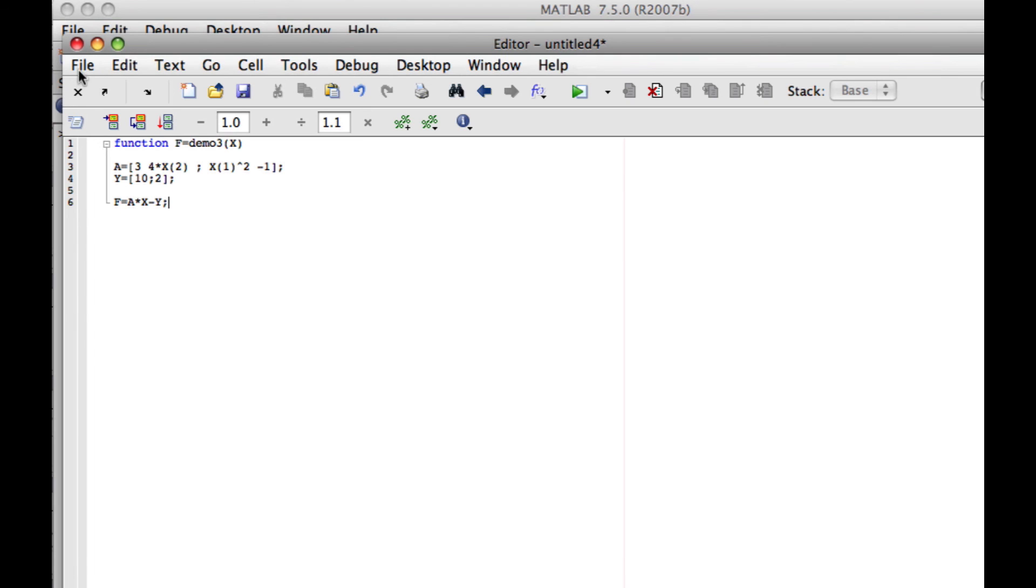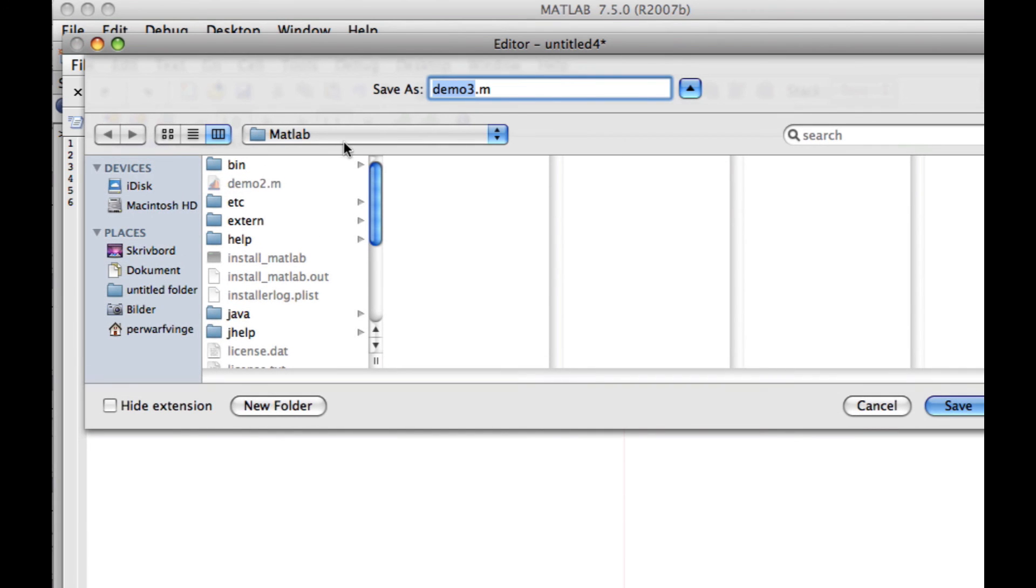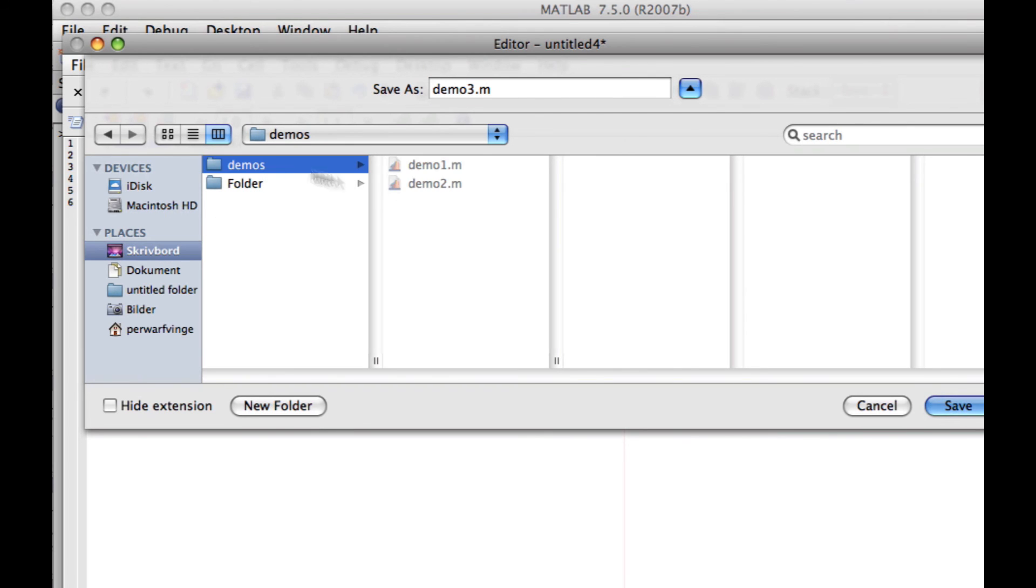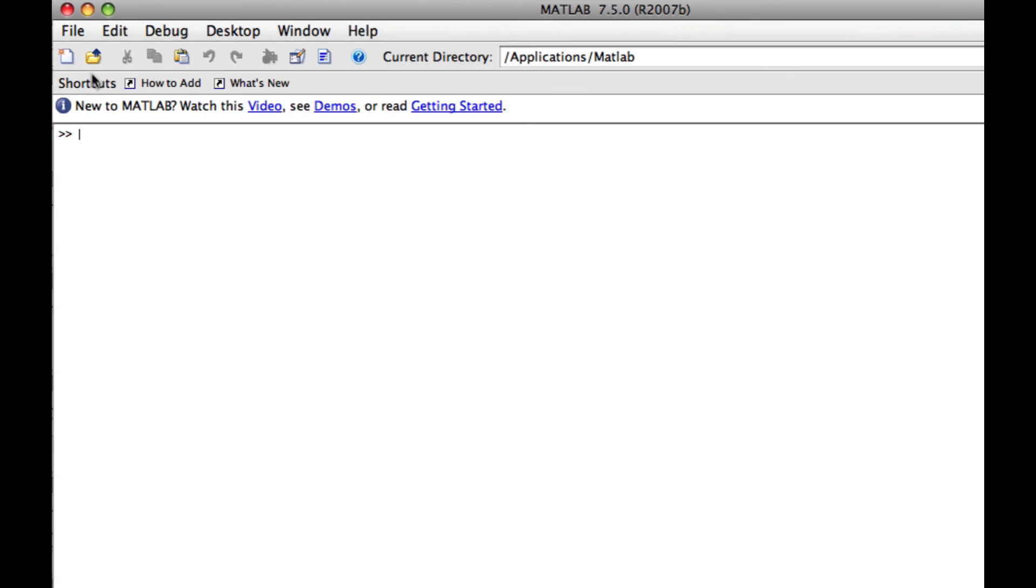I save this file as demo3 in the correct folder, in the demos folder, like this. I close my m-file, and use fsolve with demo3, remembering to provide a guess of what x1 and x2 actually are. And here we get the result for x1 and x2.